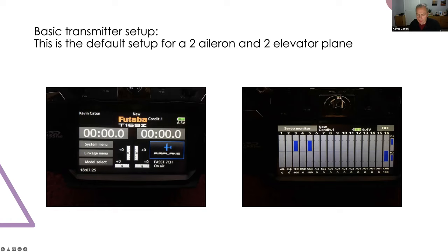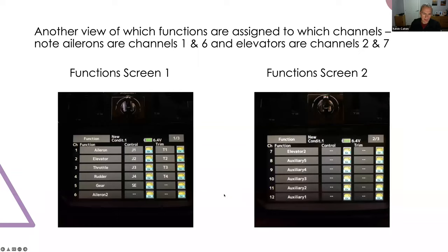Here's what the screens look like on the transmitter. That's the home screen on the 16 SZ, and I've shown the servo monitor screen displaying the channel layout default for a two-aileron, two-elevator aircraft. Aileron on channel 1, elevator channel 2, throttle - which is reversed on Futaba radios for speed controllers - on channel 3, rudder on channel 4, and undercarriage on channel 5. Channels 6 and 7 are the extra aileron and elevator servos.